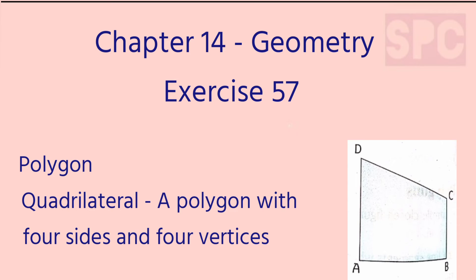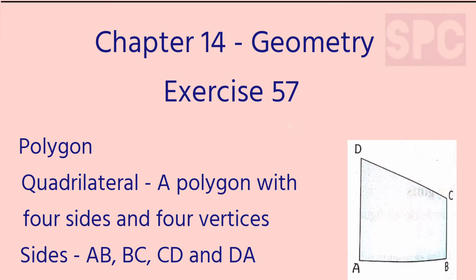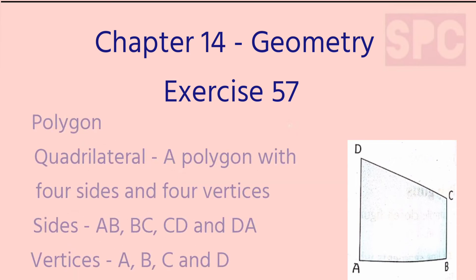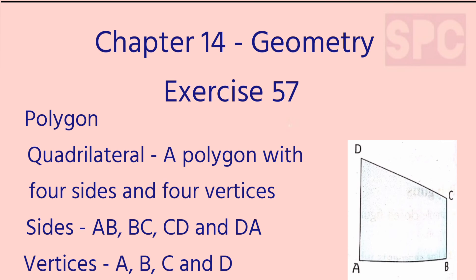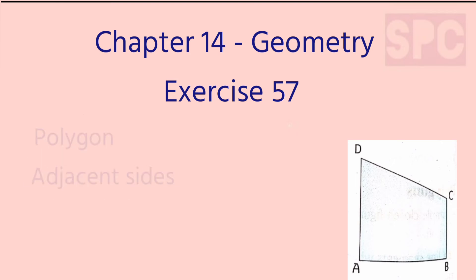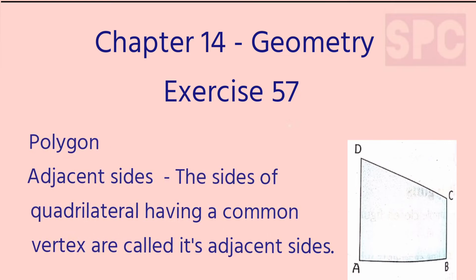Let's move on to quadrilaterals. A quadrilateral is a simple closed figure which is bounded by four line segments. Here you can see the image of a quadrilateral ABCD. It has four sides: AB, BC, CD, and DA, and four vertices: vertex A, vertex B, vertex C, and vertex D. Adjacent sides are those sides which have a common vertex. For example, side AB and side DA have a common vertex A, so these two are adjacent sides.